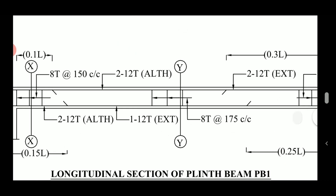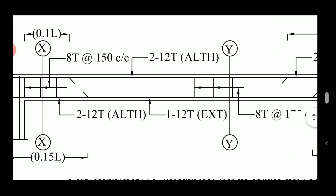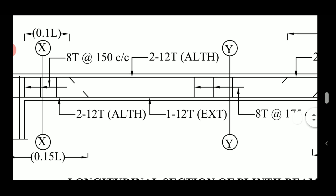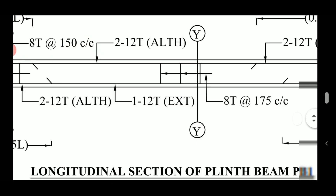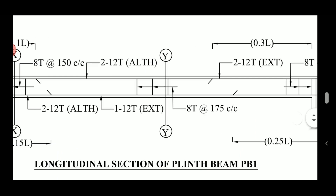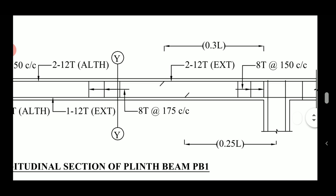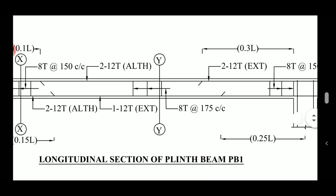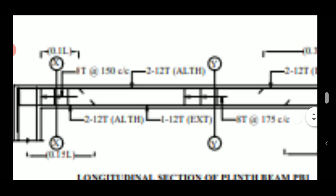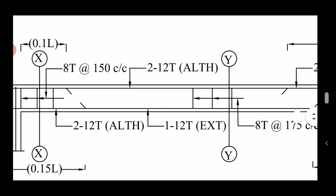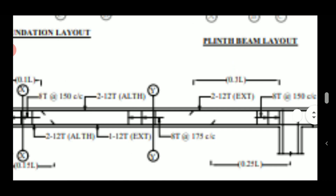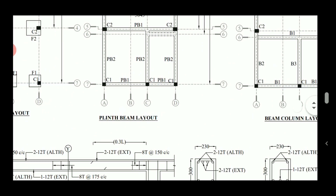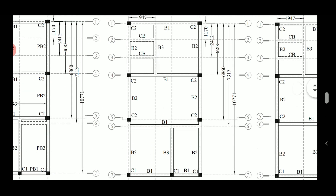At the bottom, two bars of 12 mm are provided all through, and one extra bar of 12 mm is provided at the center — leaving 0.15L from one side and 0.25L from the other side, with extra reinforcement provided in the remaining portion. Stirrups are 8 mm at 150 mm c/c near the ends and 8 mm at 175 mm c/c near the center. This completes the plinth beam schedule.